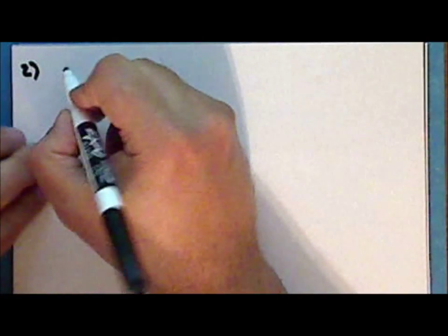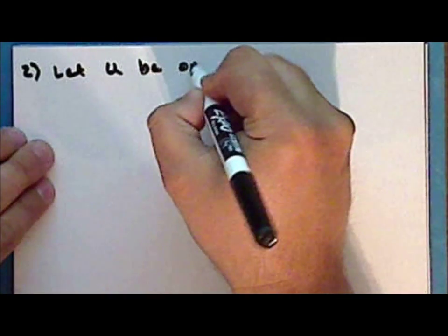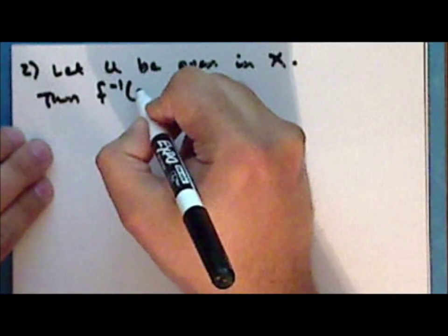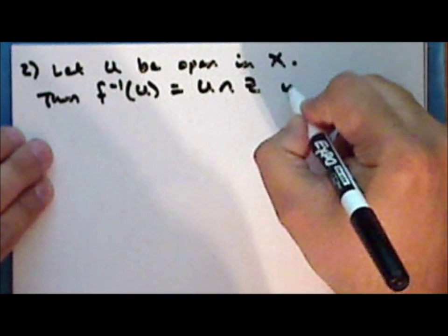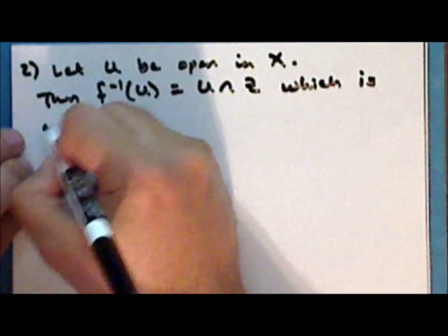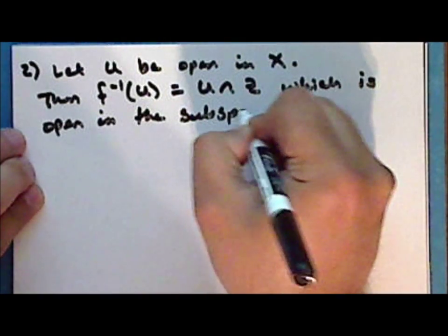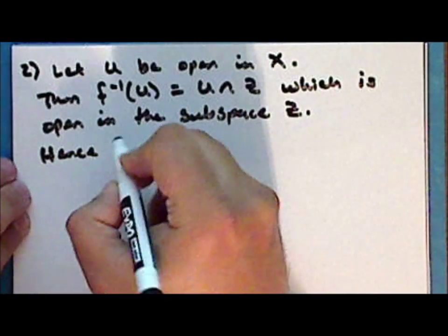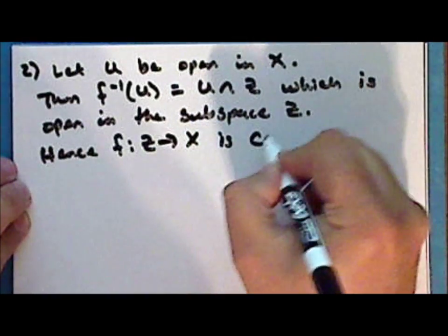Second statement: let the set U be open in the space X. Then the inverse image under the map F of the set U is the intersection of U with Z, which is open in the subspace Z, and hence the inclusion function mapping Z into X is continuous.